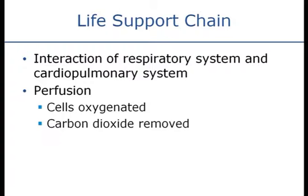The cardiopulmonary system refers to the heart and the lungs. These two systems must work together for perfusion to occur. We have to be able to get oxygen into our bloodstream, pump that oxygenated blood to all parts of our body, and get carbon dioxide back to the lungs where it can be expelled during exhalation. Anything that affects the function of the lungs, the heart, the onloading of oxygen into the blood, or the offloading of oxygen at the cells is going to lead to shock.